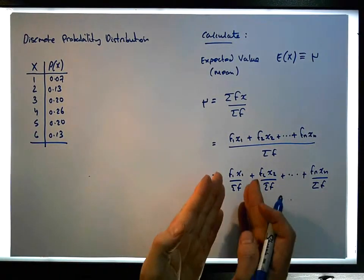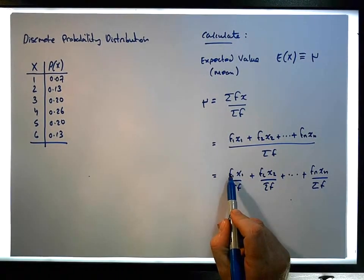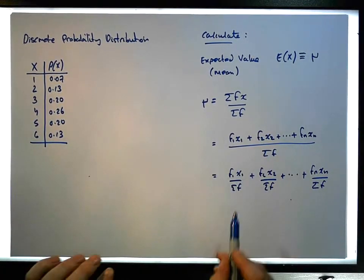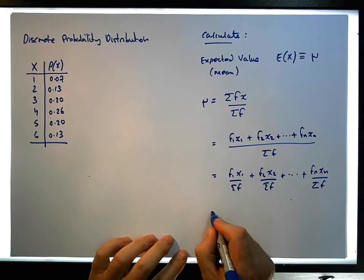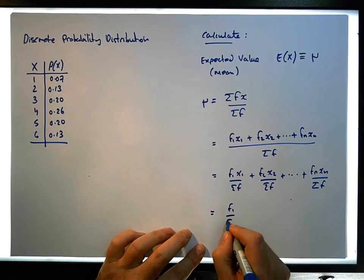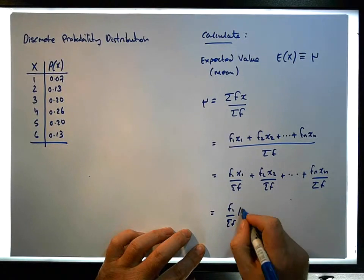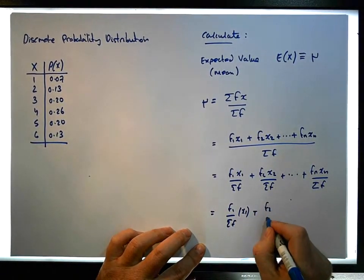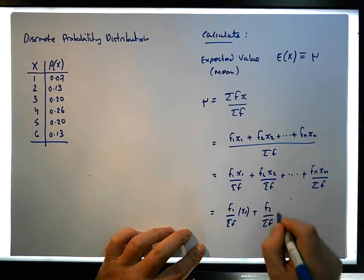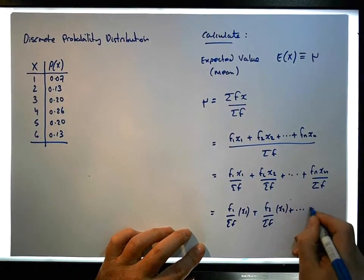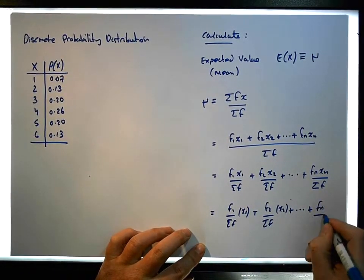Because each term is a product, we can rearrange this as f₁ over the sum of the f's times x₁, plus f₂ over the sum of the f's times x₂, plus all the way to fₙ over the sum of the f's times xₙ.